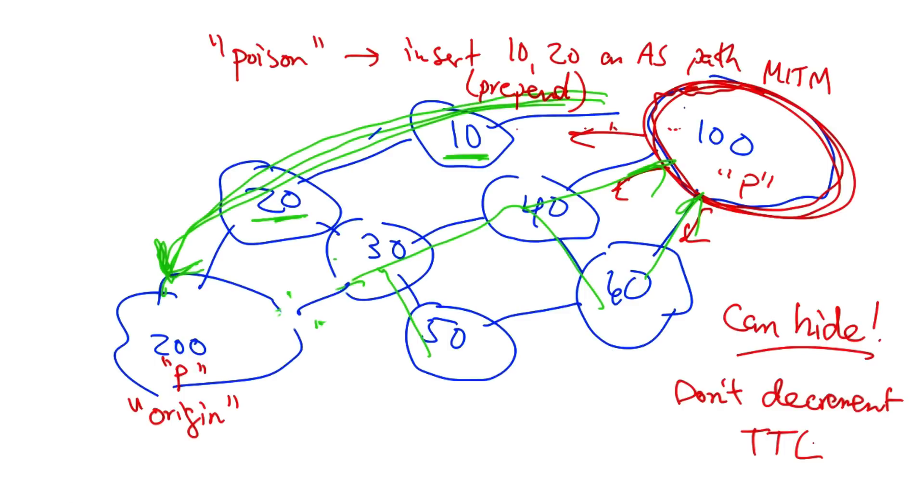Recall that a traceroute simply consists of ICMP time exceeded messages that result when a particular packet reaches a TTL of 0. Now typically each router along a path will decrement the TTL at each hop, but if the routers in the attacker's network never decrement the TTL, then no time exceeded messages would be generated by routers in AS100.